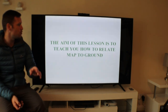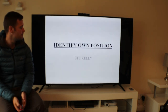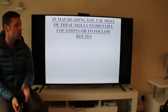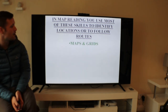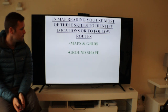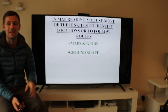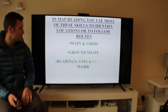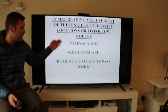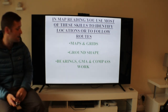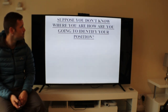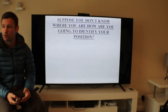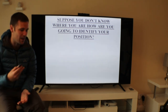The aim of this lesson is to teach you how to relate map to ground. Map reading — you use most of these skills to identify locations or to follow routes. You use your maps and grids. You look at the ground shape: is that a saddle, a spur, a re-entrance? You're already looking at the ground to relate yourself to the map. Bearings, GMA and compass work. Measuring distance. But suppose you don't know where you are — how are you going to identify your position?